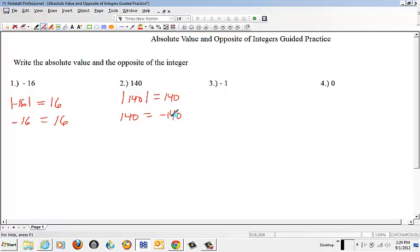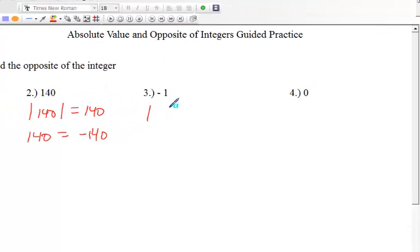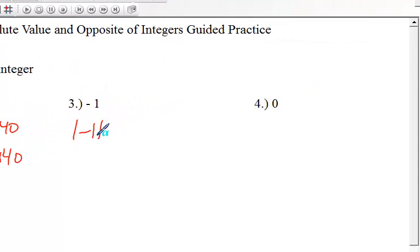Let's take a look at the third one. What is the absolute value of negative 1? So we will write this negative 1, and of course the absolute value is bringing it out. And there we go. The absolute value of negative 1 is 1.